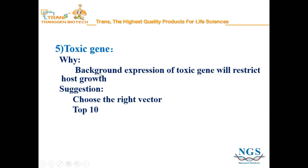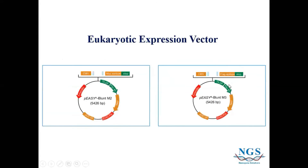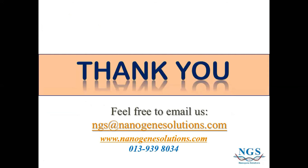Finally, background expression of a toxic gene will restrict host cell growth. We suggest choosing the right vector — for example, Top10. That concludes my sharing on the cloning kit. Besides this, Transgene also has expression vectors for both prokaryotic and eukaryotic systems. Thank you for today — that's all from my sharing.